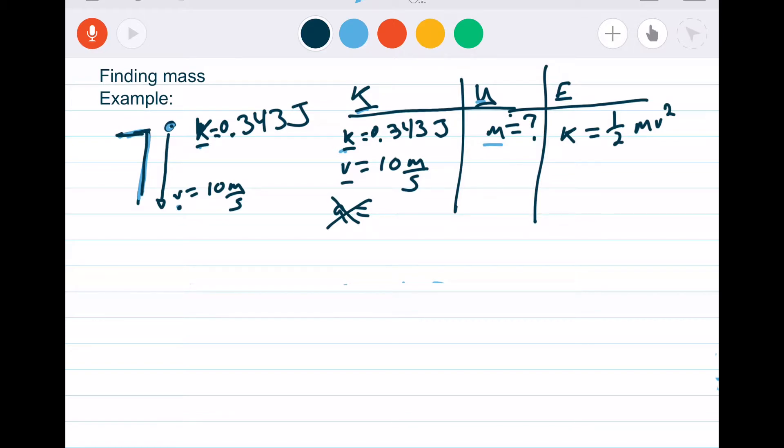K equals our formula, K equals ½mv². So I'm going to plug in some values. K is 0.343 joules equals a half. I do not know my mass, that's what I'm looking for. And v is 10, so 10 squared. 10 times 10 is 100, times m times ½ equals 0.343 joules.